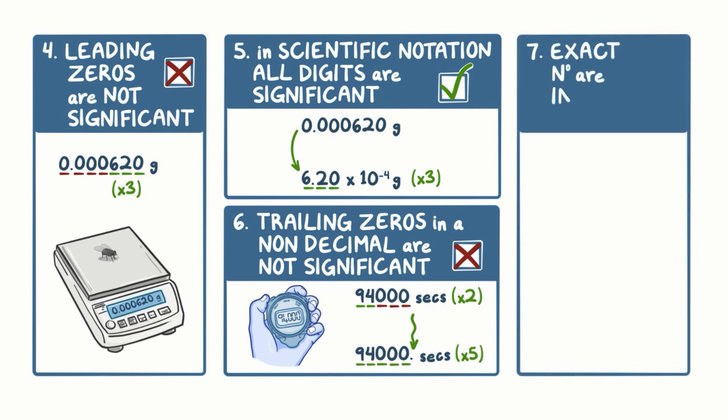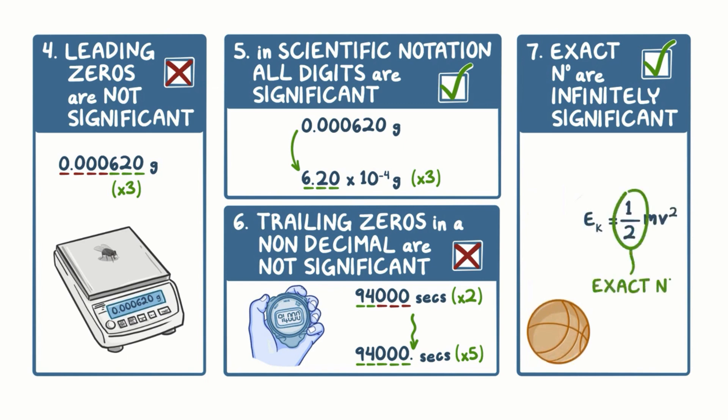Rule 7 says that exact numbers are infinitely significant. An example of that would be a calculation for kinetic energy, which has the formula one-half mv squared. In this equation, an exact number would be the half in front of this formula. You don't have to worry about significant figures when you're dealing with an exact number, so you could just do your calculation like it's not even there.